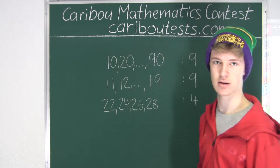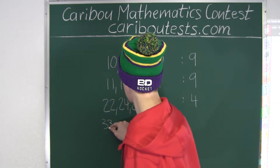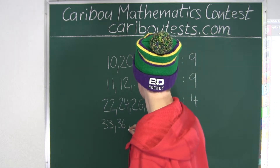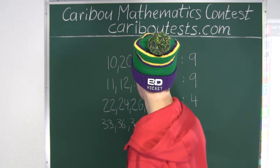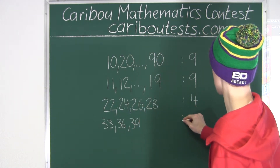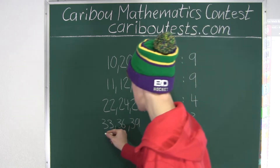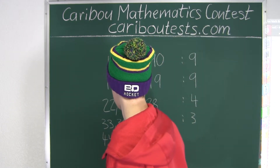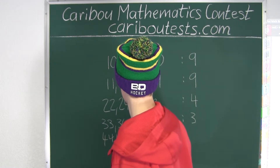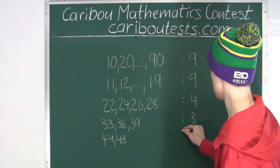Now let's look at the 30s. We have 33, 36, 39, and that's 3 numbers. Now let's look at the 40s. We have 44, 48, and that's 2 numbers.